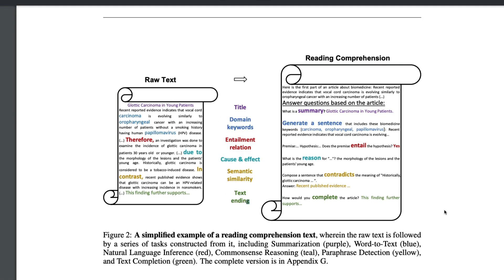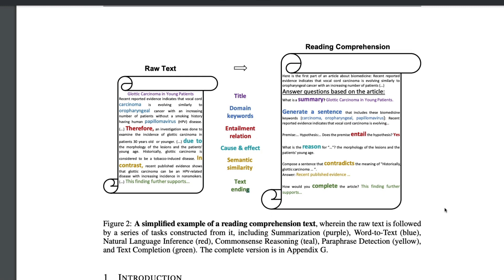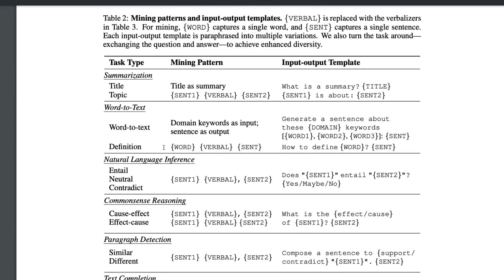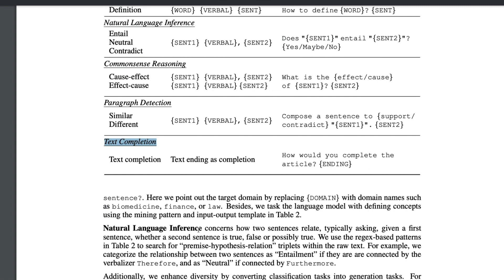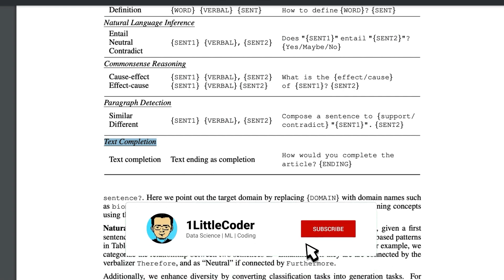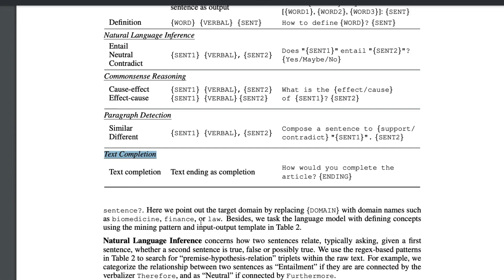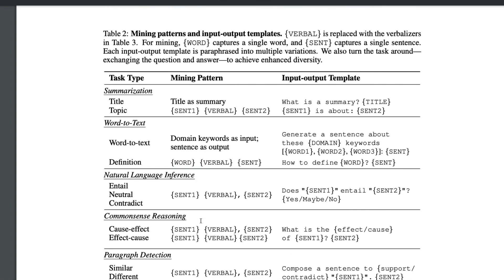The reading comprehension format contains several elements: summarization, word-to-text, natural language inference, common sense reasoning, paraphrase detection, and text completion. The raw domain text is translated into templates for each of these tasks. The approach suggests taking the general LLM and training it on this reading comprehension dataset rather than doing DAPT.